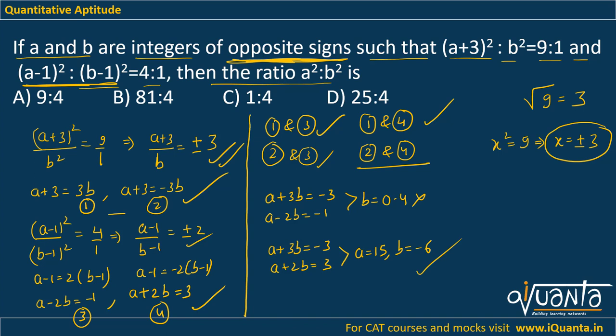With a = 15 and b = -6, we find a/b = 15/(-6) = 5/(-2). Therefore a²:b² = 25:4, so option D is the correct answer. Keep checking whatever condition is given — this wasn't tough. If you still have a doubt, please comment. Thank you.